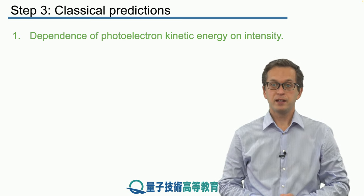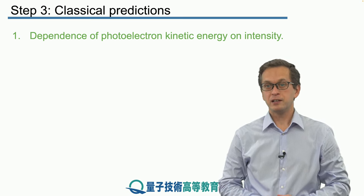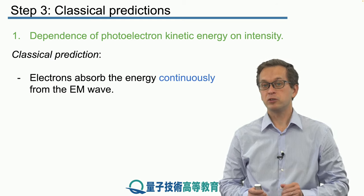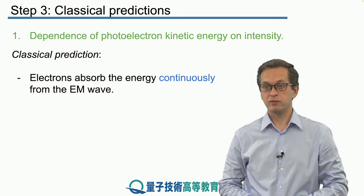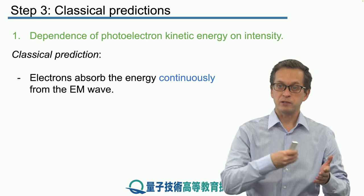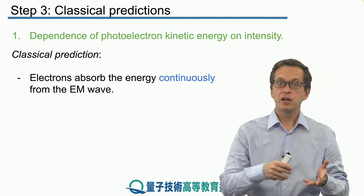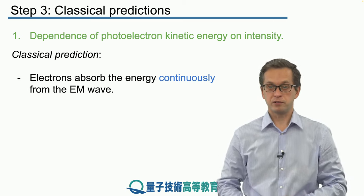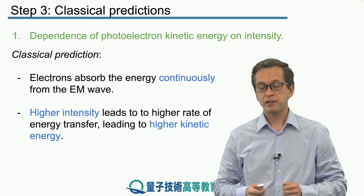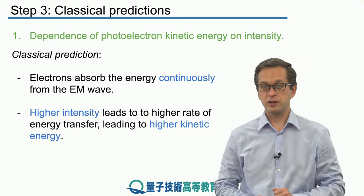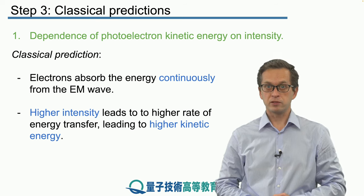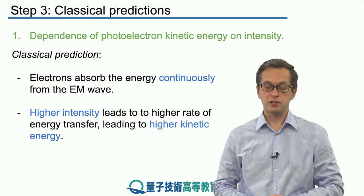Observation number one: dependence of photoelectric kinetic energy on intensity. Classical theory tells us that electrons absorb energy continuously from the electromagnetic wave. The electromagnetic wave is continuously coming, the light is constantly on, so it's transferring energy into our metal, into our electrons. Higher intensity leads to a higher rate of energy transfer, producing more energetic electrons and resulting in higher kinetic energy.